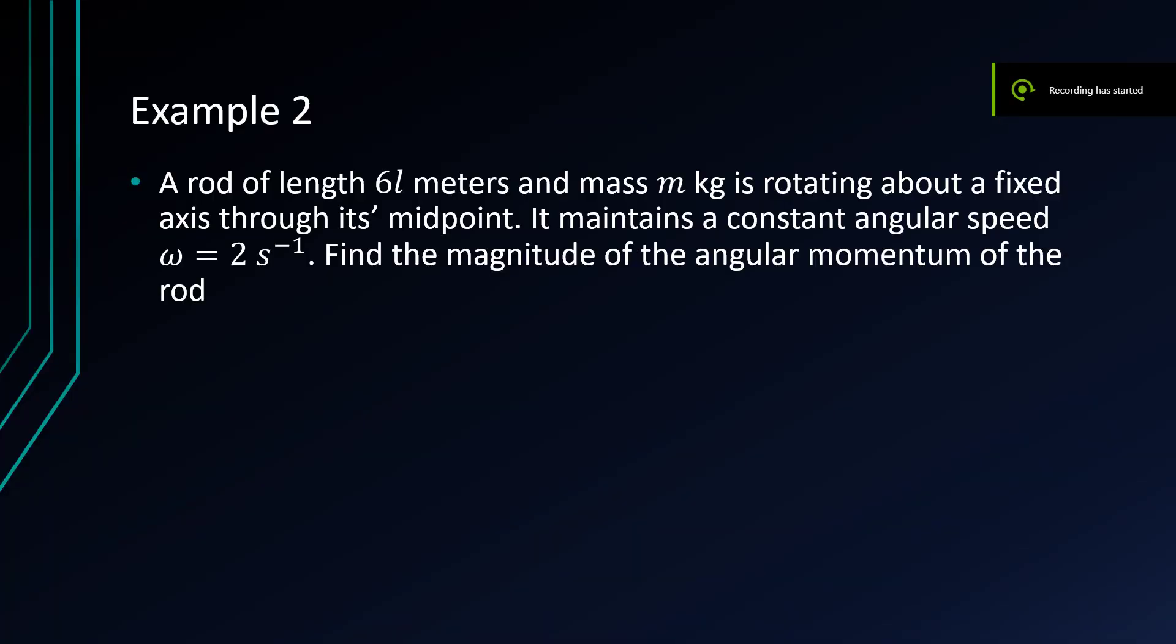So here's a slightly more algebraic problem. A rod of length 6l meters and mass m kilograms is rotating about a fixed axis through its midpoint. It maintains a constant angular speed omega equals 2 per second. Find the magnitude of the angular momentum of the rod.